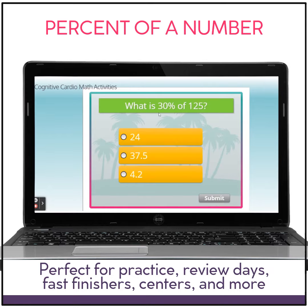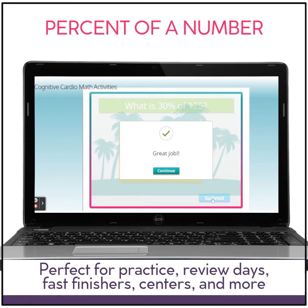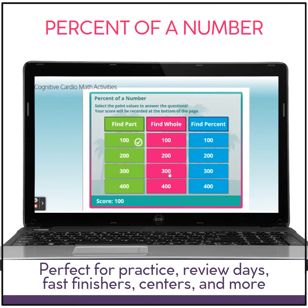Starting with Find the Part: what is 30% of 125? The answer is 37.5. Students have time to calculate before making their choice, then they submit. Great job — it was correct! We can see that question has been used and we now have a score of 100 points.